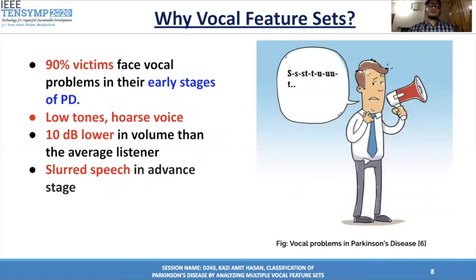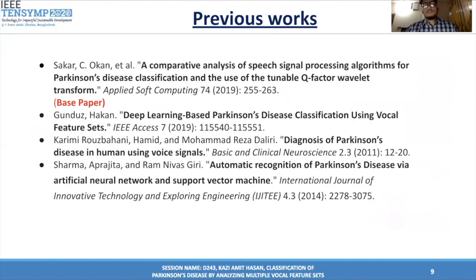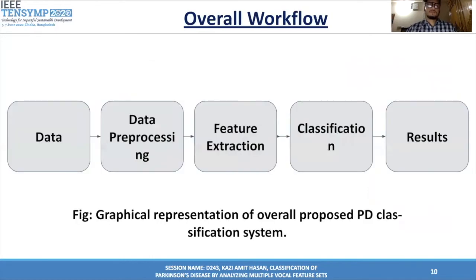Now, why vocal feature sets? Out of all existing features, vocal features are the most prominent. 90% of PD people face vocal problems in their early stages. The symptoms are low tones, hoarse voice, volume about 10 decibels lower than the average listener, and slurred speech in advanced stages. These are the previous works that have been done in this field. Now, the overall workflow.